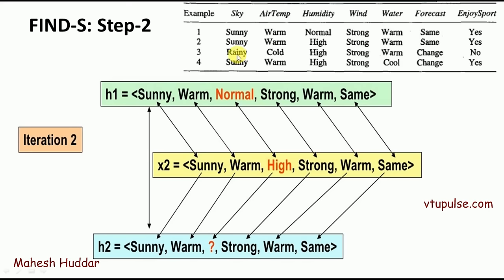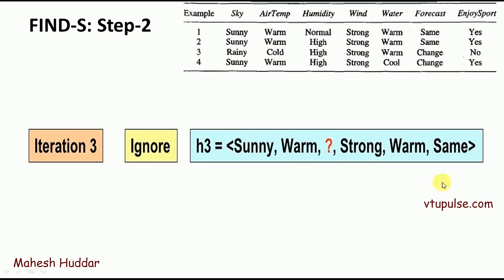In the third iteration, we consider the third example. However, the third example is a negative example, so we do nothing and ignore it. Whatever hypothesis we had previously is carried forward as the third hypothesis.